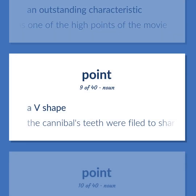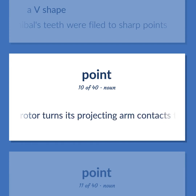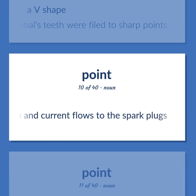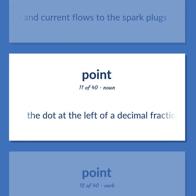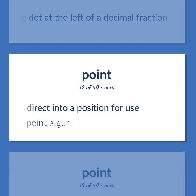Point: A V-shape. Example: The cannibal's teeth were filed to sharp points. A contact in the distributor — as the rotor turns, its projecting arm contacts them and current flows to the spark plugs. The dot at the left of a decimal fraction. Direct into a position for use. Example: Point a gun.